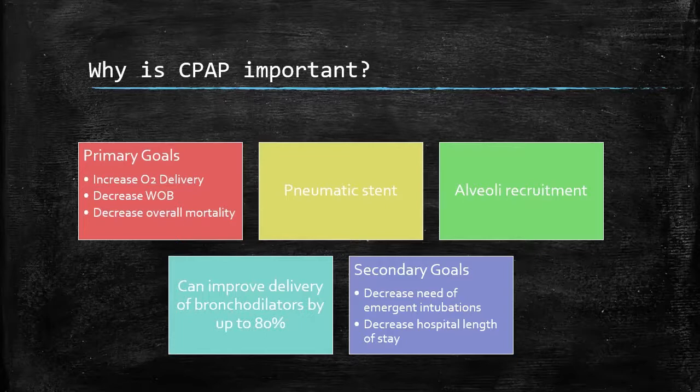Why is CPAP important? One of the reasons is it increases our O2 delivery. We can apply a non-rebreather to a patient at 15 liters per minute — that's essentially 100% oxygen. But if this patient has COPD, emphysema, bronchitis, pneumonia, or asthma, some of that oxygen is not getting to where it needs to go. CPAP can increase that O2 delivery — not only does it get it into the patient, but it's going to push it to where it actually needs to go: the alveoli, so gas exchange can happen.